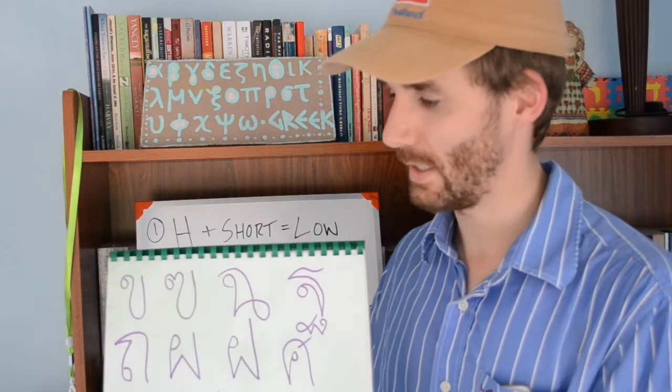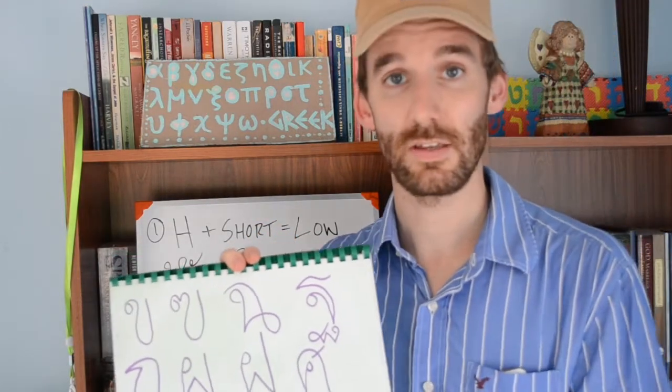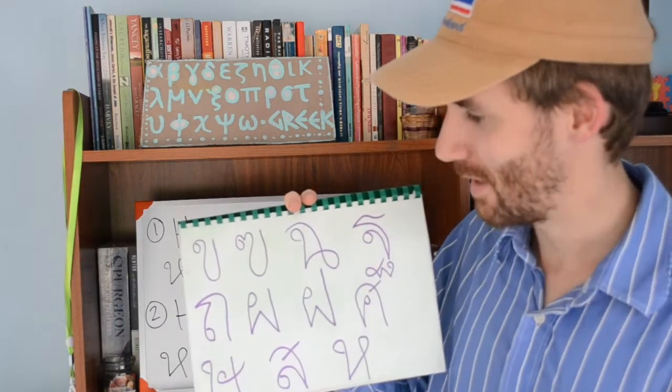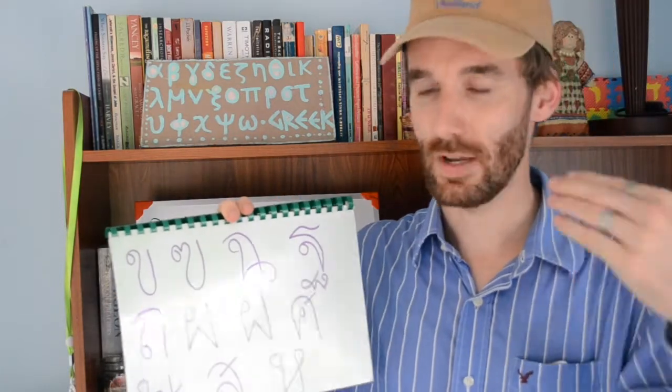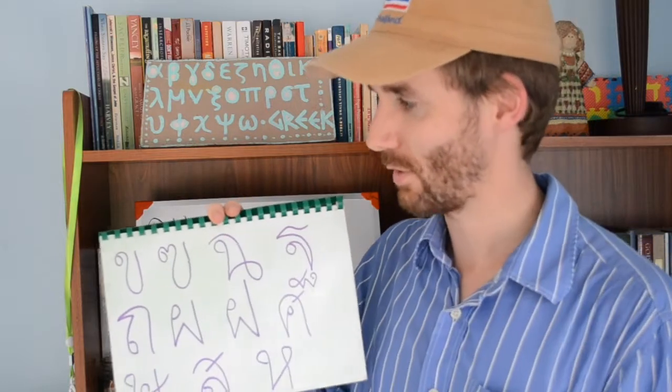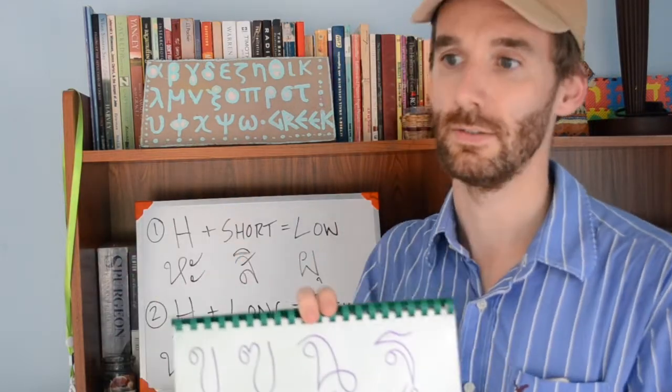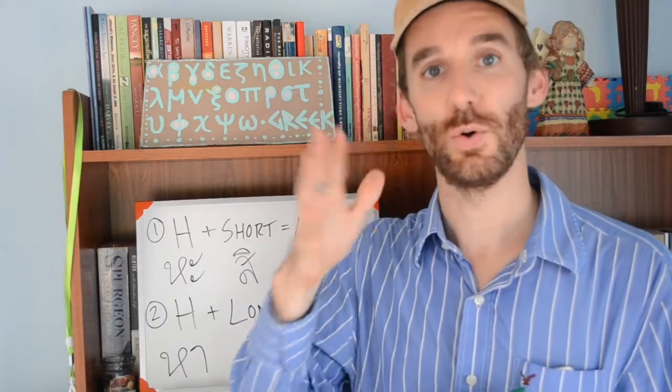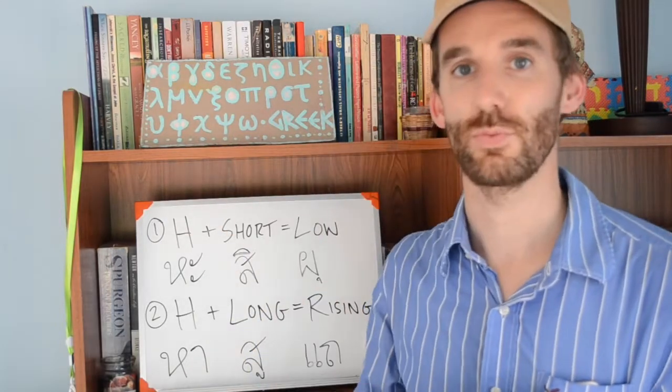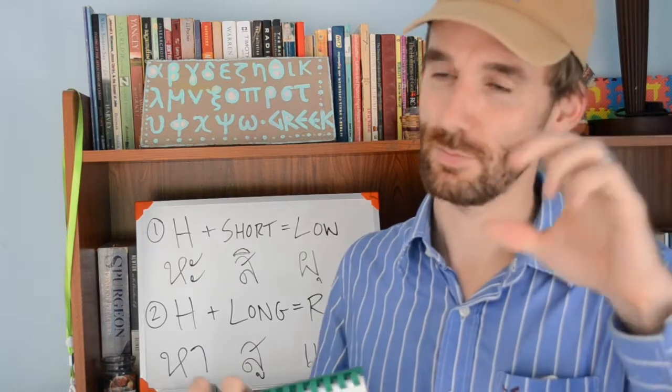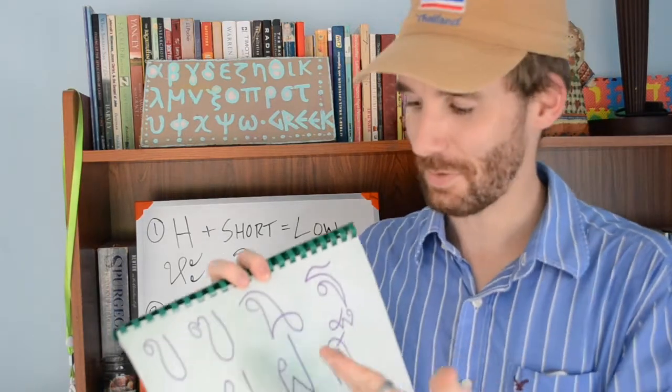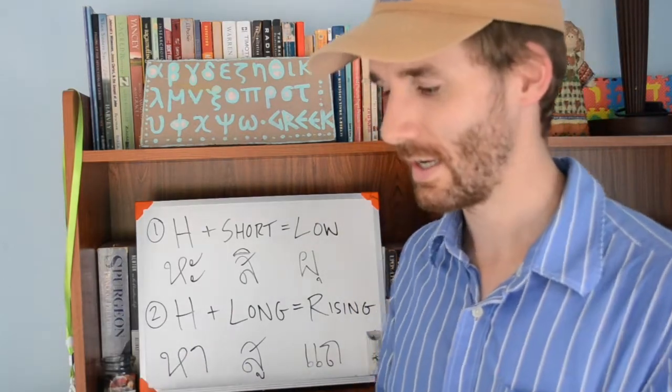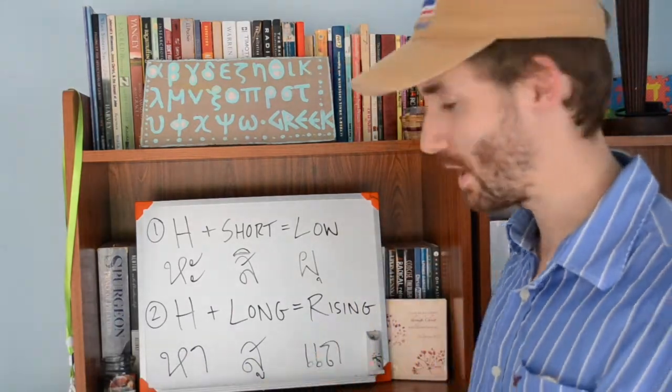So 11 total. Just encourage you to memorize these, maybe make flashcards, find a way that you can get these into your mind in terms of memorizing that these are the characters that make up the high class. You're going to want to memorize them so you don't have to look up the letters every time you want to read something. That takes time though, so I want to encourage you to try to find a system that works for you to memorize these.